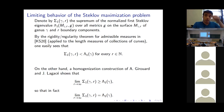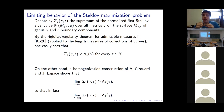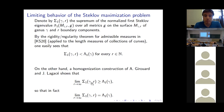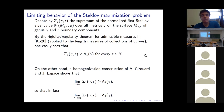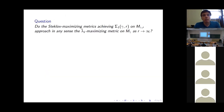On the other hand, around the same time last year, Girouard and Lagacé showed by a homogenization construction that inside any given closed surface, excising a large dense collection of disks whose total area goes to zero produces a sequence of domains whose Steklov spectrum converges to the Laplacian spectrum. Consequently, σ₁(γ, r) → λ₁(γ) as r → ∞. Combining the two statements: the Steklov maxima σ₁(γ, r) converge as r → ∞ to the global Laplacian eigenvalue maximum.